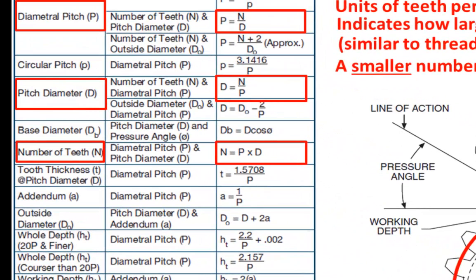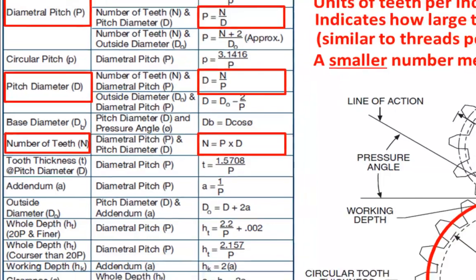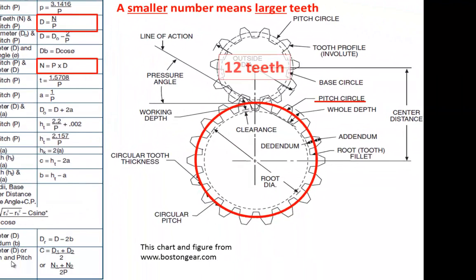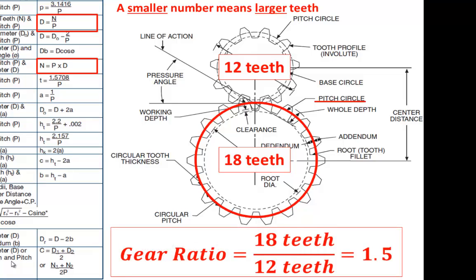The number of teeth on a gear is also a very important parameter, which is used in calculating the pitch diameter and in determining gear reduction ratios. For instance, the smaller gear in this figure has 12 teeth and the larger gear has 18 teeth, which would result in a gear ratio of 1.5 to 1. The large gear would turn 1.5 times slower than the smaller gear but would have 1.5 times higher torque.